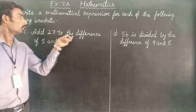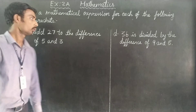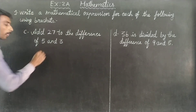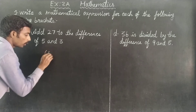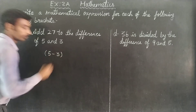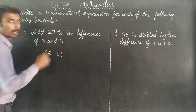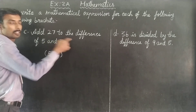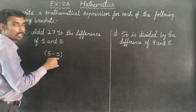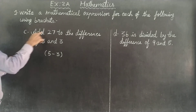Add 27 to the difference of 5 and 3. So the difference means minus. Use a bracket: open bracket 5 minus 3. The difference of 5 and 3 is 5 minus 3, then next add 27.